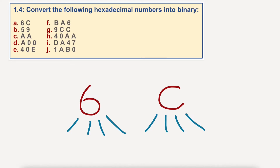I'm going to put the numbers 1, 2, 4, 8 above the first set of eyelashes, and 1, 2, 4, 8 above the second set.